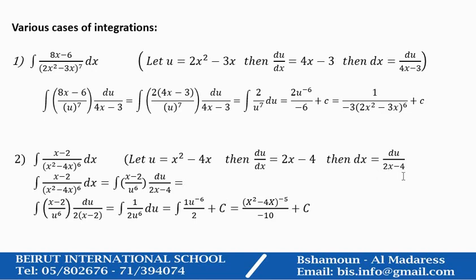Obviously, you have two common factors in the denominator. You substitute and take the two common factors. You end up with integration of (x minus 2) over u to power 6 du, and x minus 2 will be eliminated. You end up with integration of 1 over 2u to power 6 du, which gives (x squared minus 4x) to power minus 5 over minus 10 plus c.